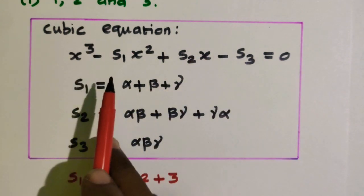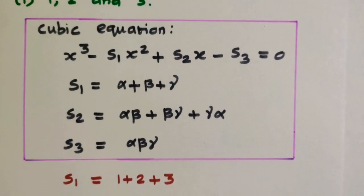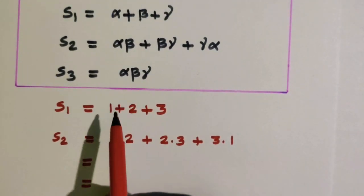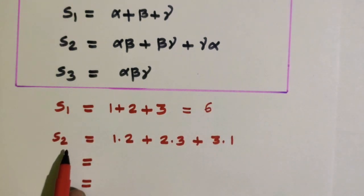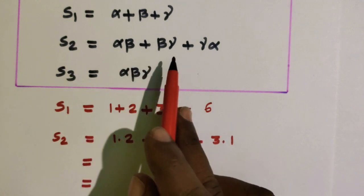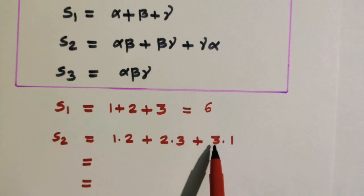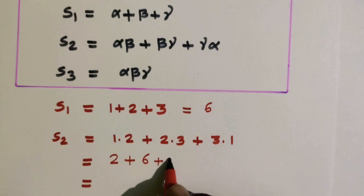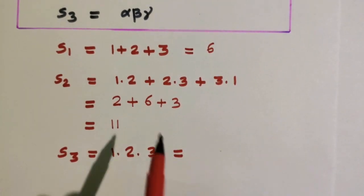Once we find s1, s2, and s3, we substitute into the equation to form the cubic equation. From the given roots, s1 equals sum of the roots: 1 plus 2 plus 3, that is equal to 6. And s2 equals 1 into 2 plus 2 into 3 plus 3 into 1, which gives 2 plus 6 plus 3, so s2 is equal to 11.